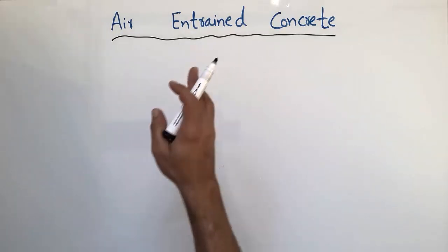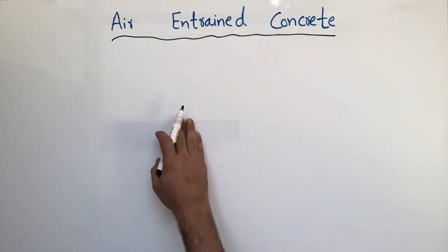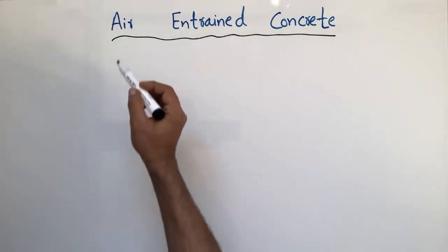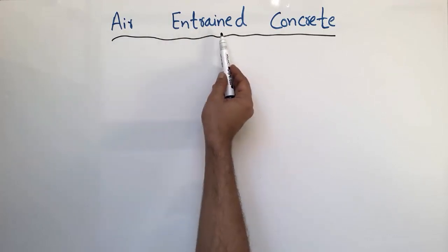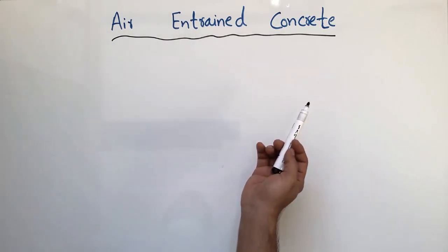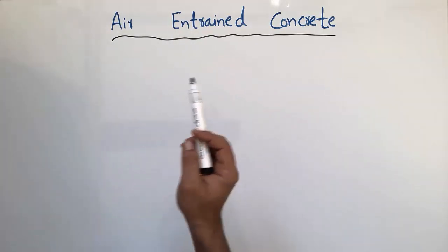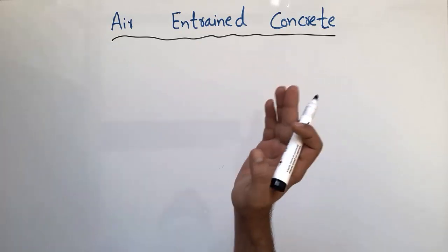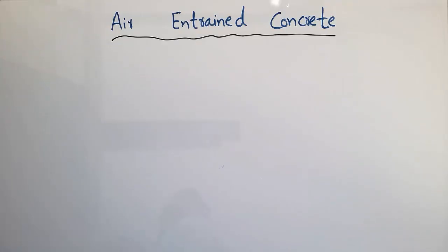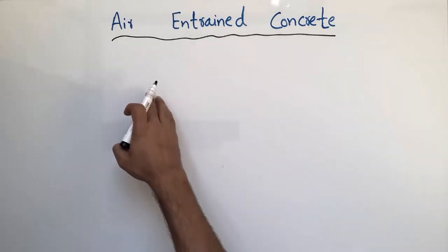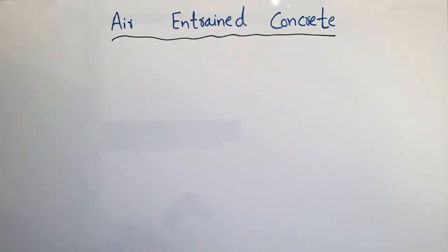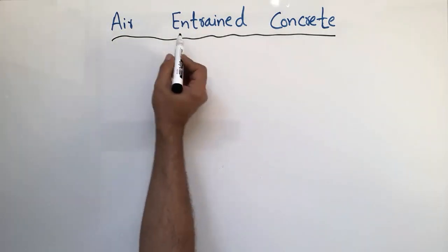This type of concrete is especially used when the concrete is exposed to freezing and thawing action. Air entrained concrete is less strong than normal concrete, but to increase durability in climates where there is freezing and thawing action, you must place air entrained concrete.